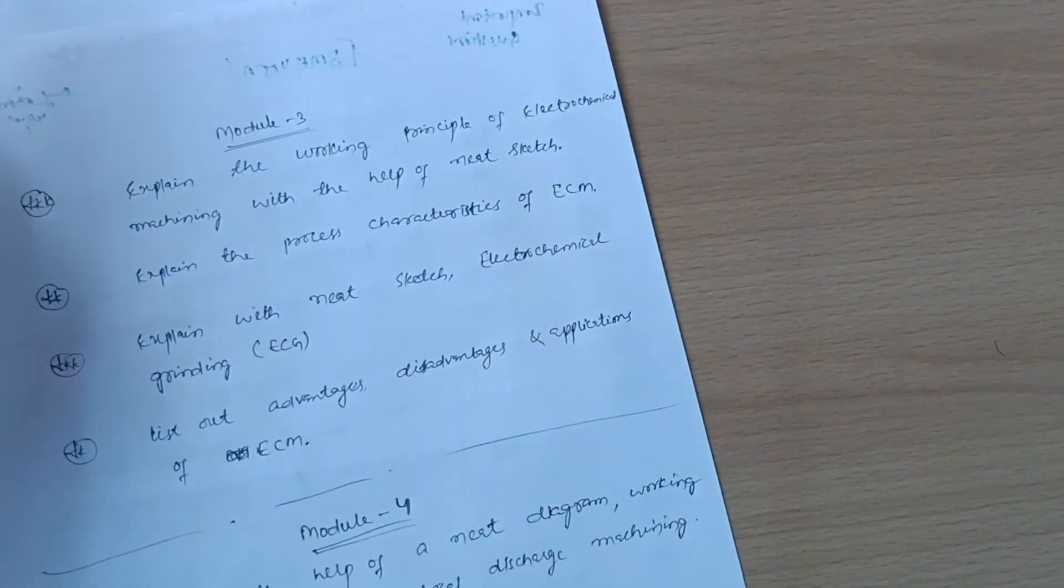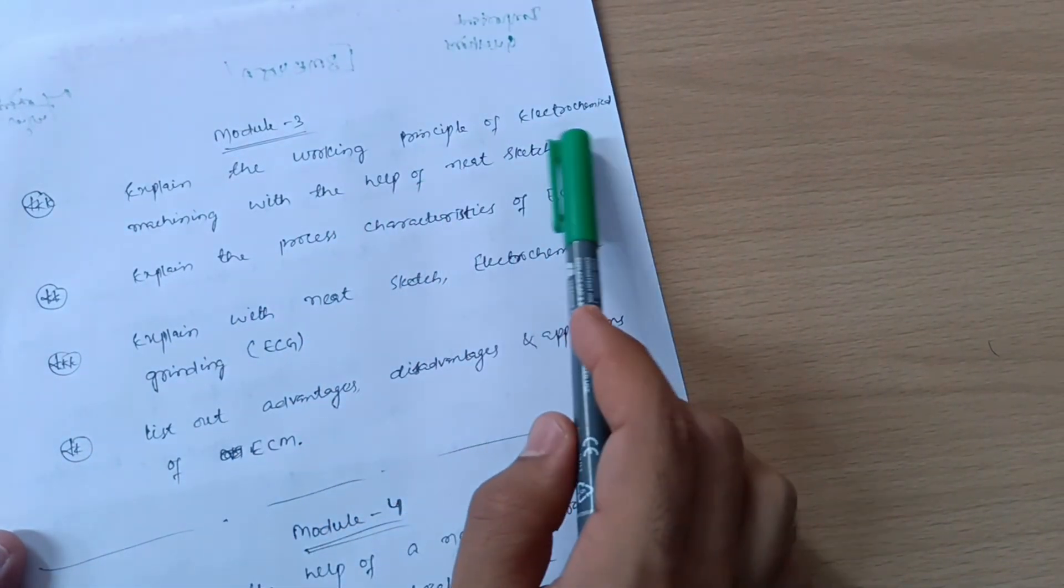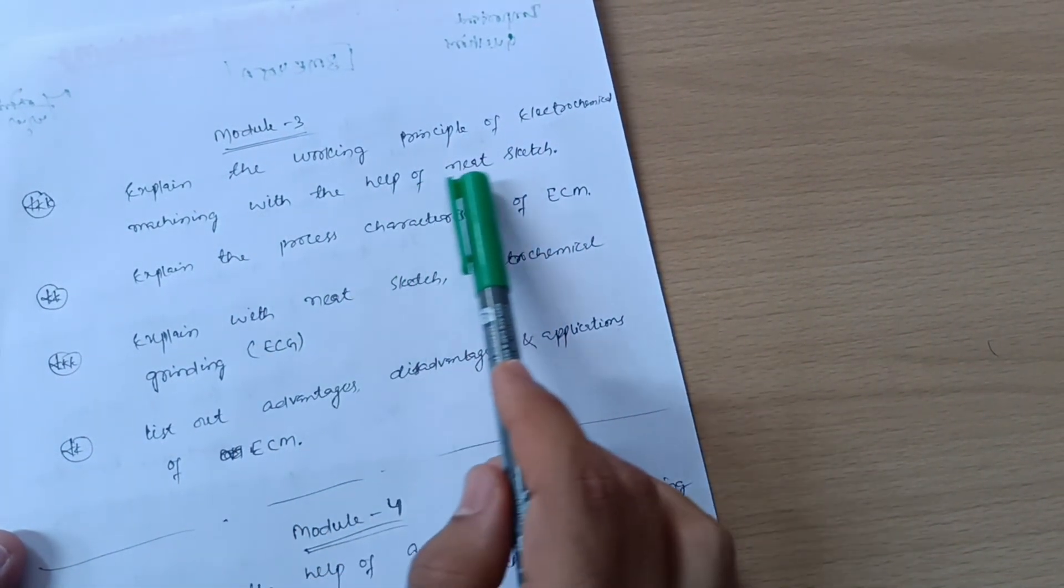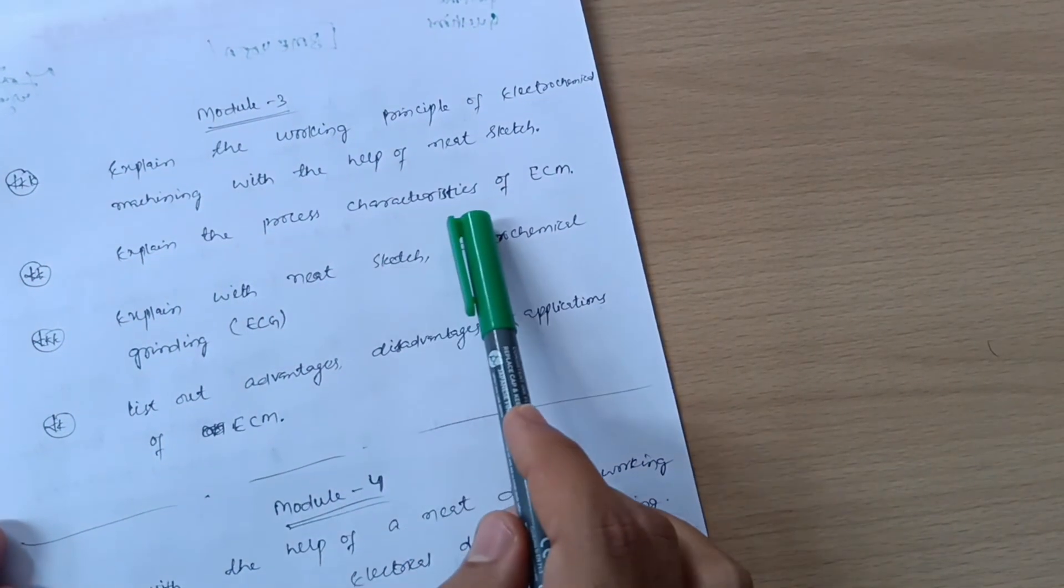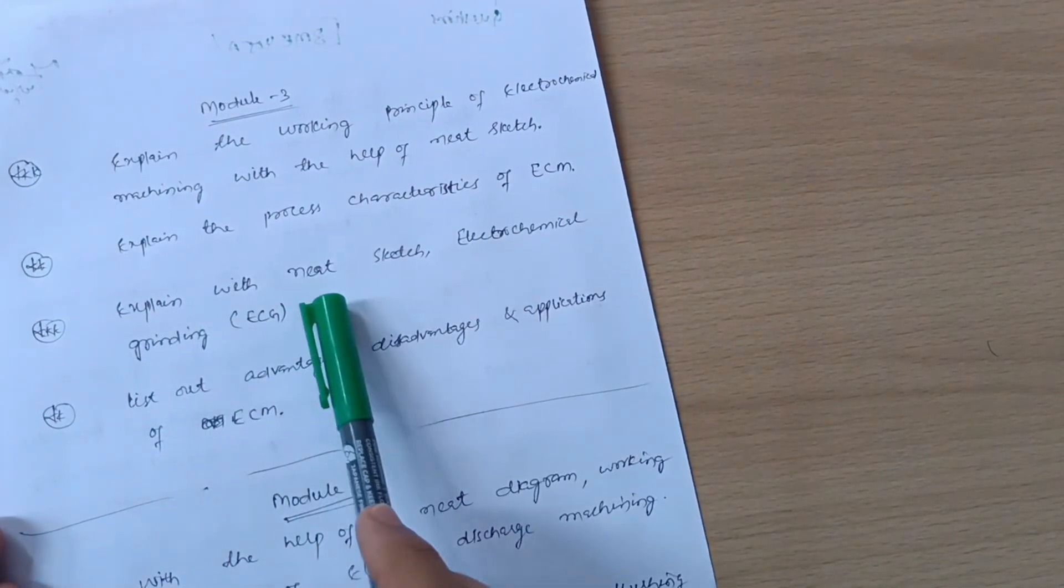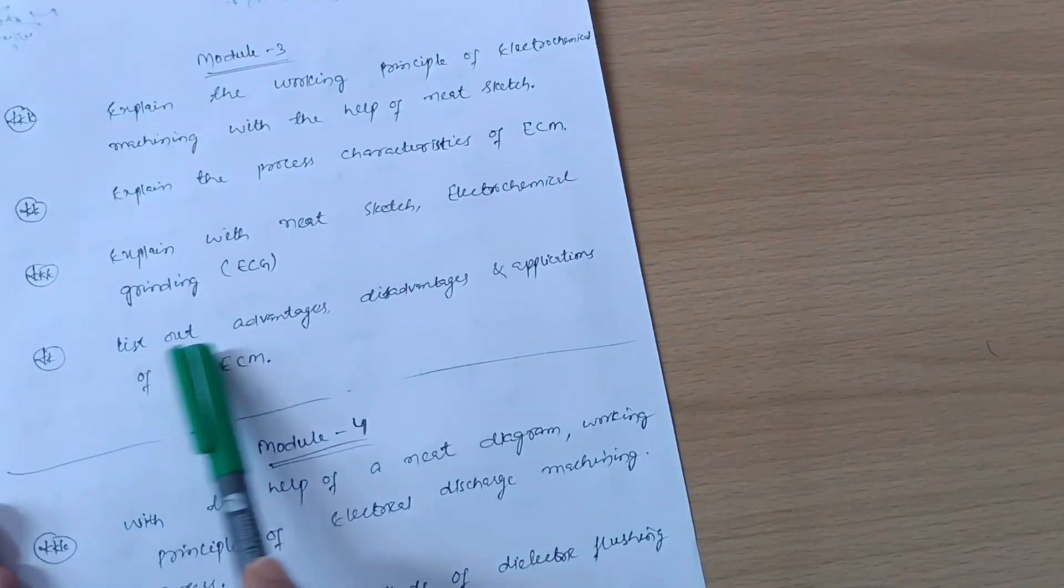This is all about model second. Now model third - you have to cover four questions: explain the working principle of electrochemical machining with the help of neat sketch, explain the process characteristics of ECM, explain with neat sketch electrochemical grinding ECG, list out advantage disadvantage and applications of ECM.